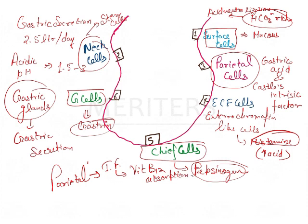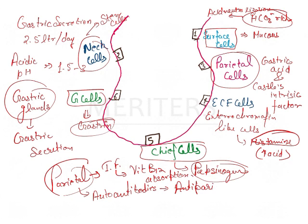In certain conditions, autoantibodies are formed against the parietal cells. These antibodies are known as anti-parietal antibodies, and they cause a type of anemia known as pernicious anemia, as well as achlorhydria.